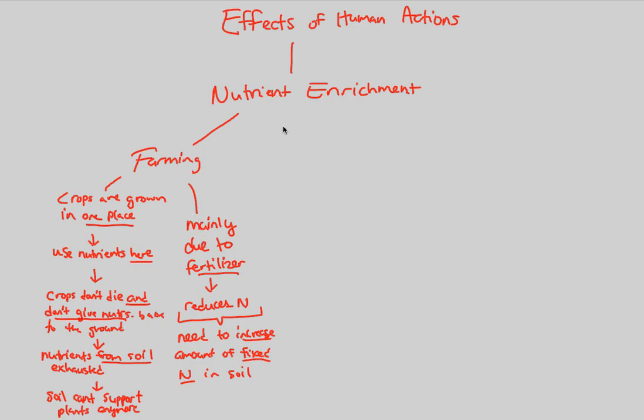Now another big thing to understand about nutrient enrichment, besides the idea that it happens in farming due to this fertilizer usage, is the idea of a critical load. Last thing about nutrient enrichment. A critical load is simply the amount of added nutrients that can be absorbed by plants without damaging ecosystem integrity. That's the key here, without damaging that ever so important ecosystem integrity.